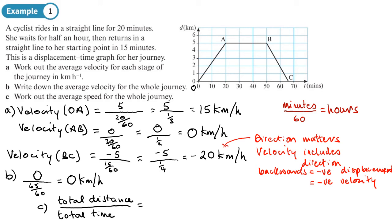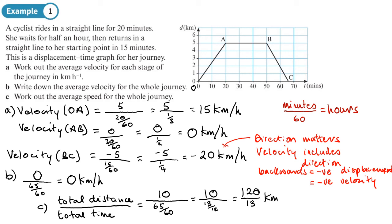For part C, we work out the average speed for the whole journey. Average speed = total distance ÷ total time. The total distance is 5 km there plus 5 km back = 10 km. Total time is 65 minutes = 65/60 hours. So speed = 10 ÷ (65/60) = 10 × (12/13) = 120/13 kilometers per hour exactly, which is approximately 9.23 km/h to three significant figures.